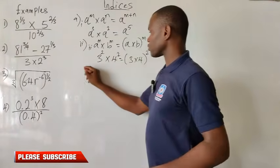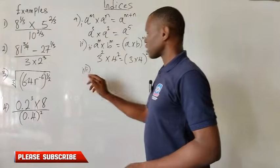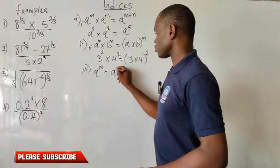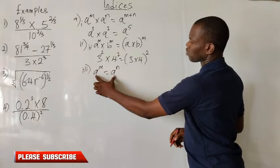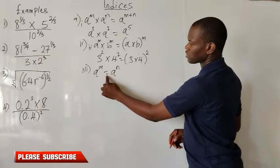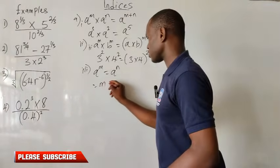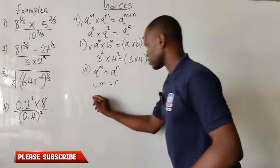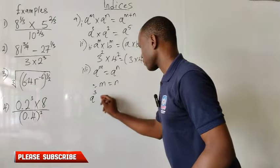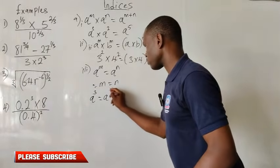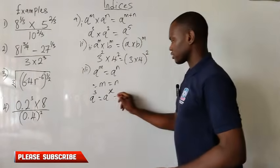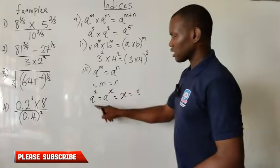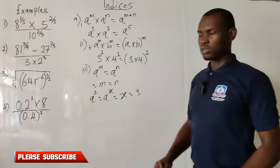Let's consider the third part, which has to do with equations. I have a raised to the power m equal to a raised to the power of n. Both bases are equal and we have an equality sign in between. All you need to do is conclude that the powers are also equal, so m equals n. For instance, a raised to the power of 3 equal to a raised to the power of x — the value of x would simply be 3, because the bases are equal, so the powers are also equal.